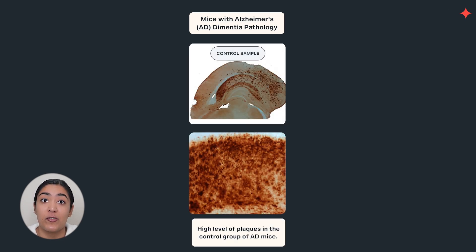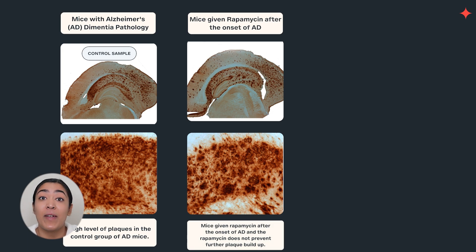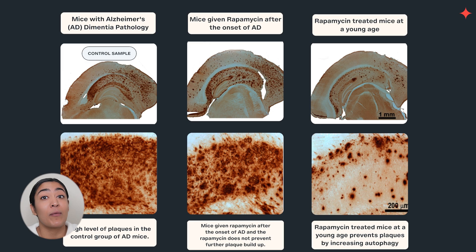A study conducted at the University of Texas Health Science Center at San Antonio tested what effects rapamycin has on the brains of mice. The study looked at a control group of mice with Alzheimer's disease pathology — the brains of these mice had high levels of plaques, as seen in this image. The researchers treated the mice with rapamycin and found that while it did not clear out the plaque, it did prevent further buildup. Researchers then treated young mice with no degeneration with rapamycin and found that these young mice never built up plaque, indicating that rapamycin may have preventative effects when it comes to Alzheimer's disease.